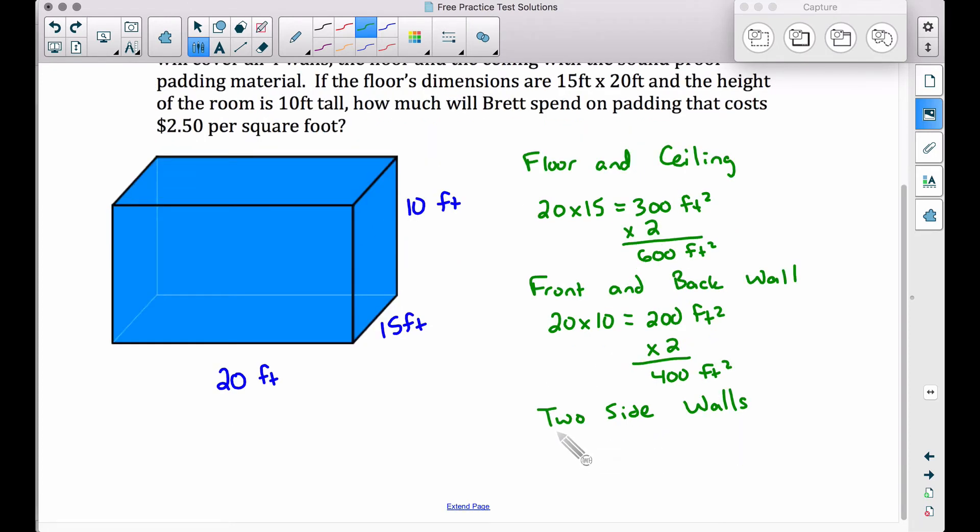Finally, we have our two side walls. That's this side wall you see over here, and then this one right back here. I know that one's a little bit tougher to see, but think about it like that. These two side walls have the same area. Over here, we have 15 feet by 10 feet.